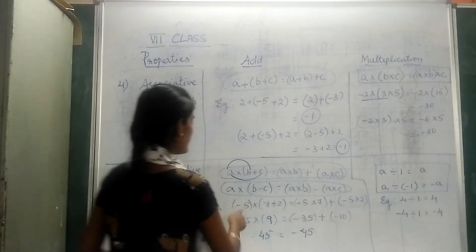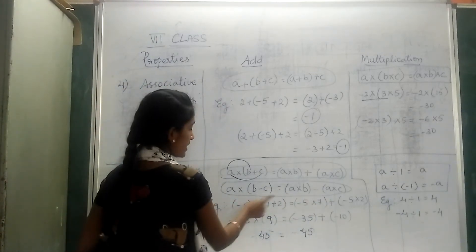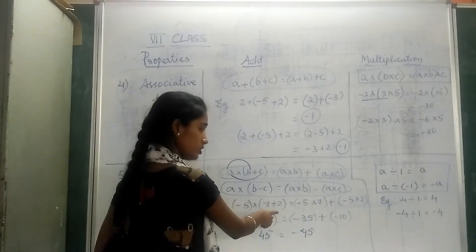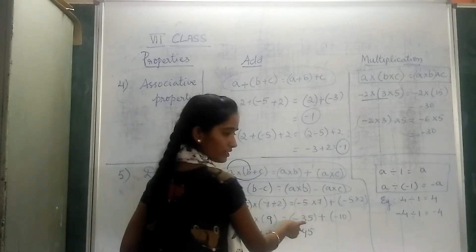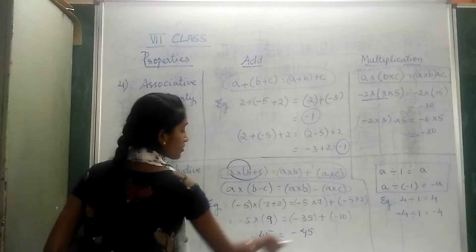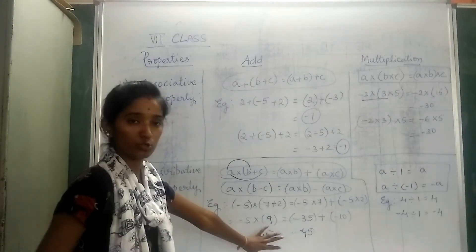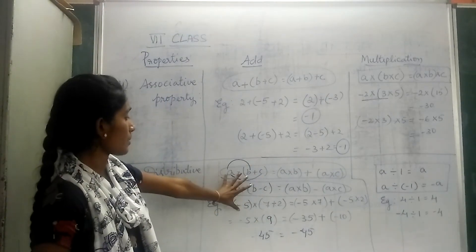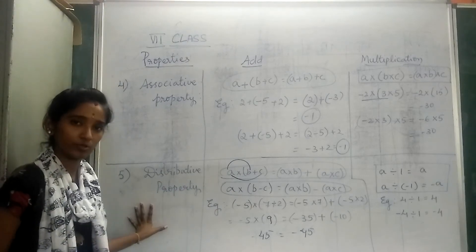Now, the other side. 5 can be multiplied with 7 and 5 also can be multiplied with 2. -5 × 7 = -35 and -5 × 2 = -10. The answer is the same. The sign is also same. So, this property satisfies the distributive property.